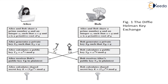To elaborate on Diffie-Hellman, we take an example of communication between Alice and Bob. Alice and Bob share a prime number q and an integer alpha, such that alpha is less than q and alpha is a primitive root of q. Alice generates a private key x_A such that x_A is less than q, and Bob generates a private key x_B such that x_B is less than q.